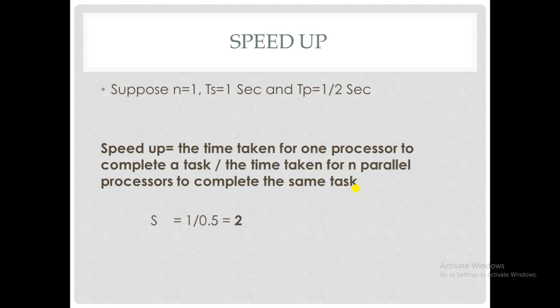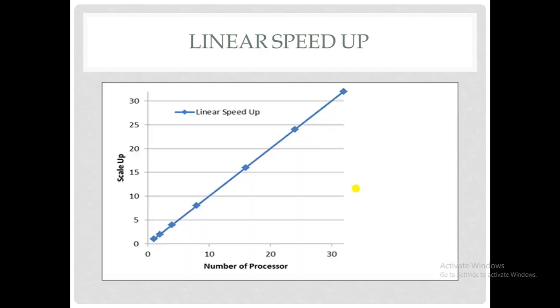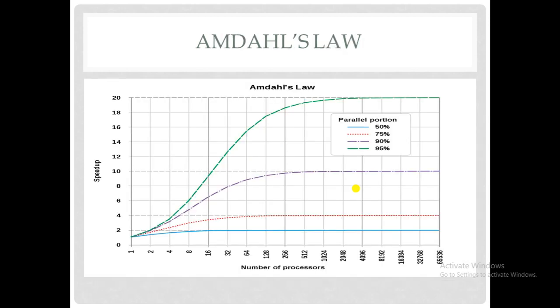We can achieve S equal to 1 divided by 0.5, which equals 2. The speedup doubles in this case. When the number of processors increases, the speedup also increases in a linear fashion. But in real time, this is not possible because of Amdahl's Law. The speedup is not linear — it follows a non-linear manner.